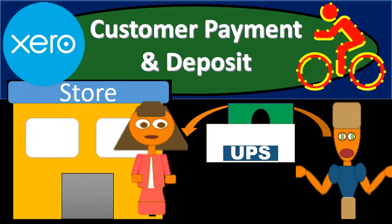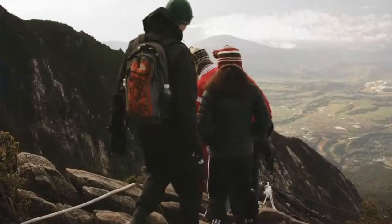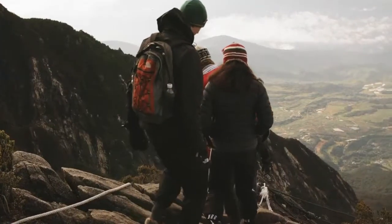In this presentation we're going to record the customer payment and deposit. We have an invoice that happened in the past. We're going to receive a customer payment on that invoice, combine it with other payments, go to the bank, and make the deposit, recording that in our system as well. Here we go with Xero.